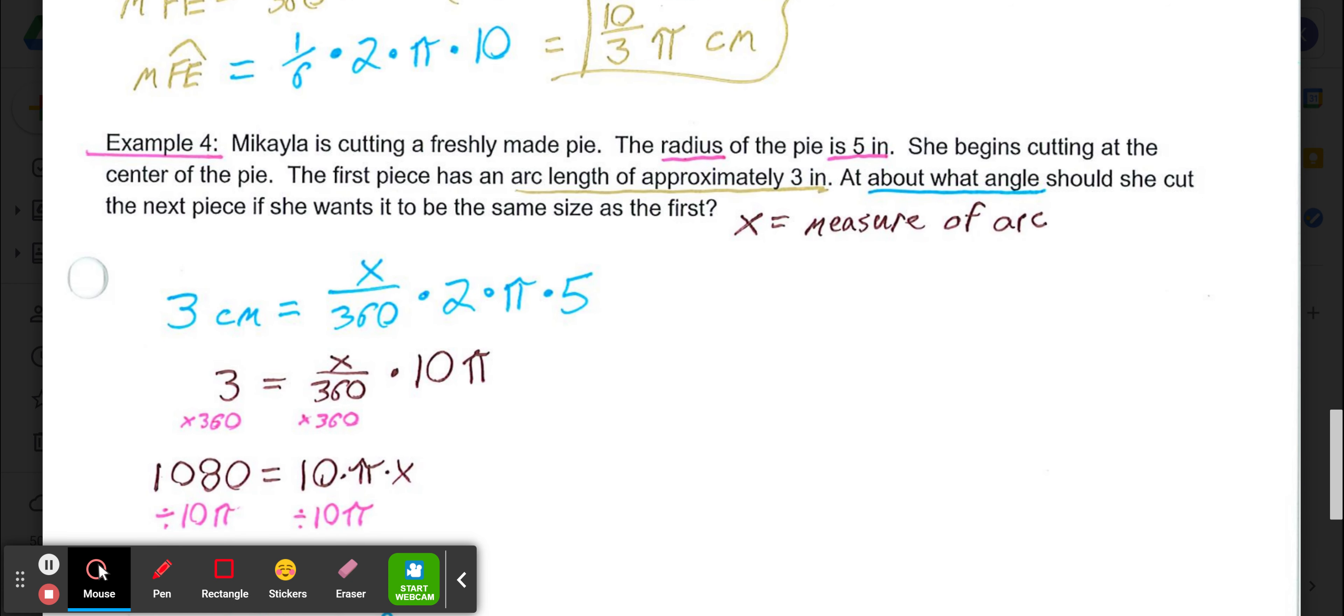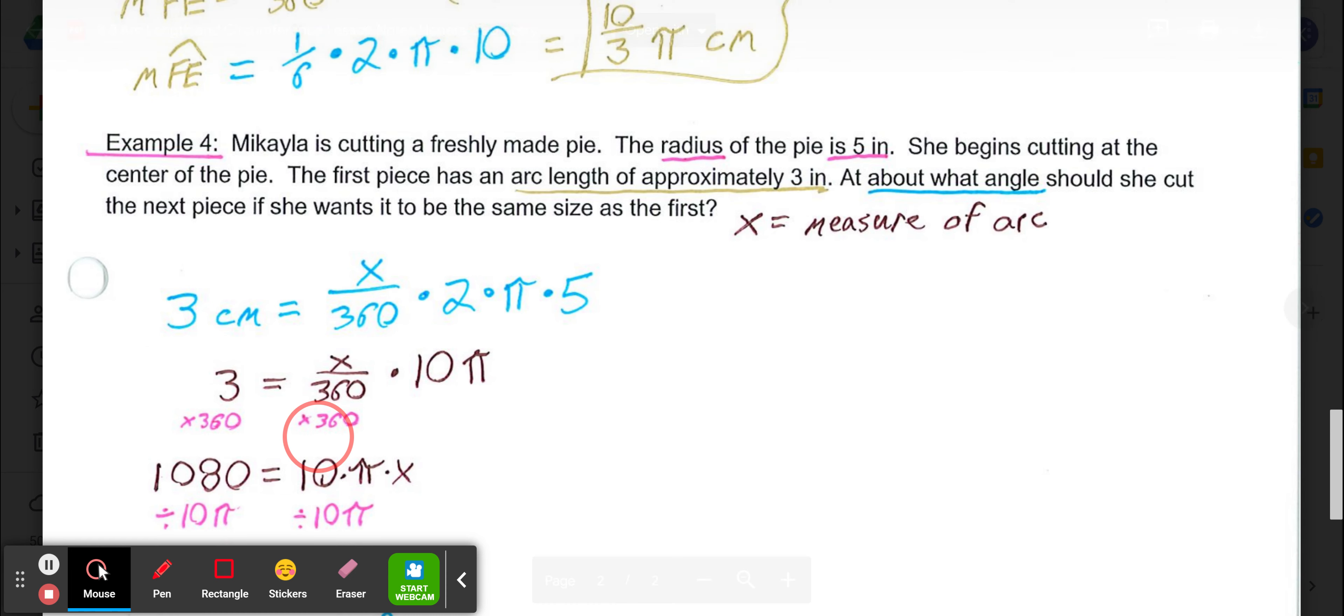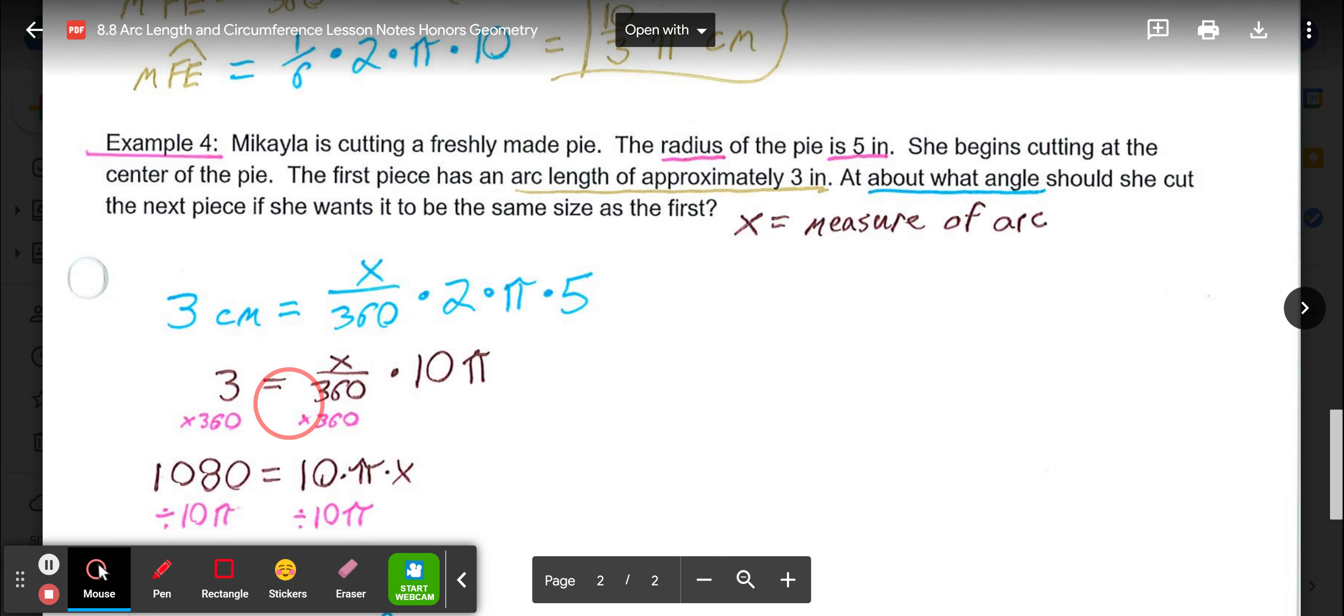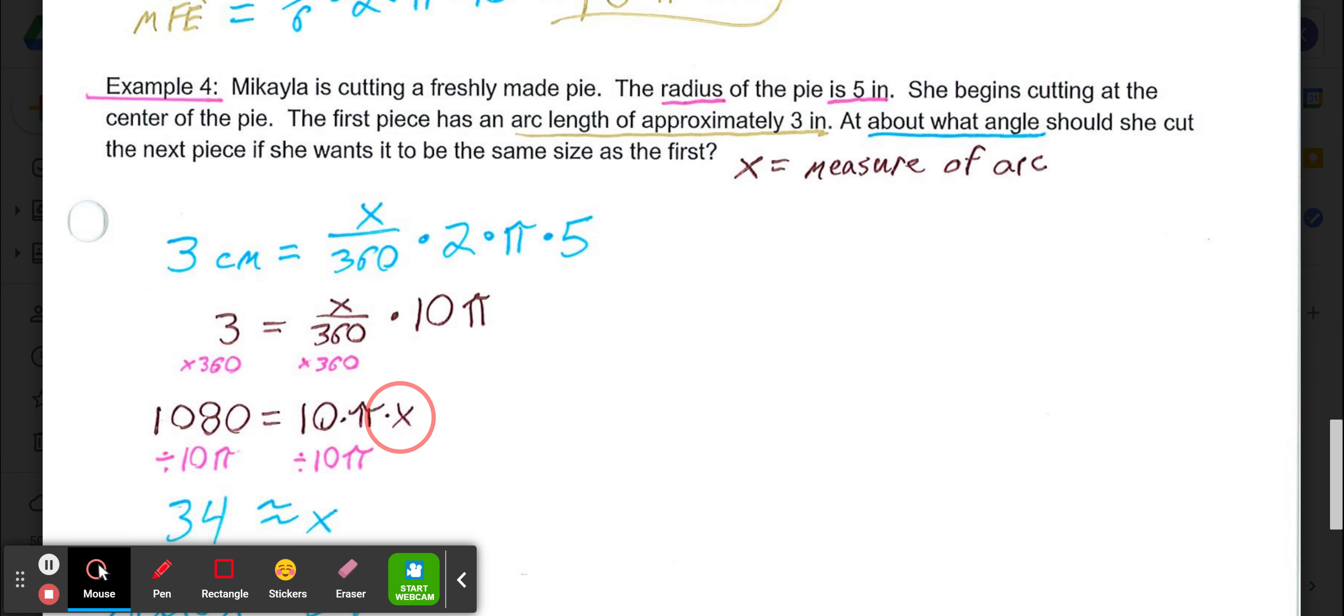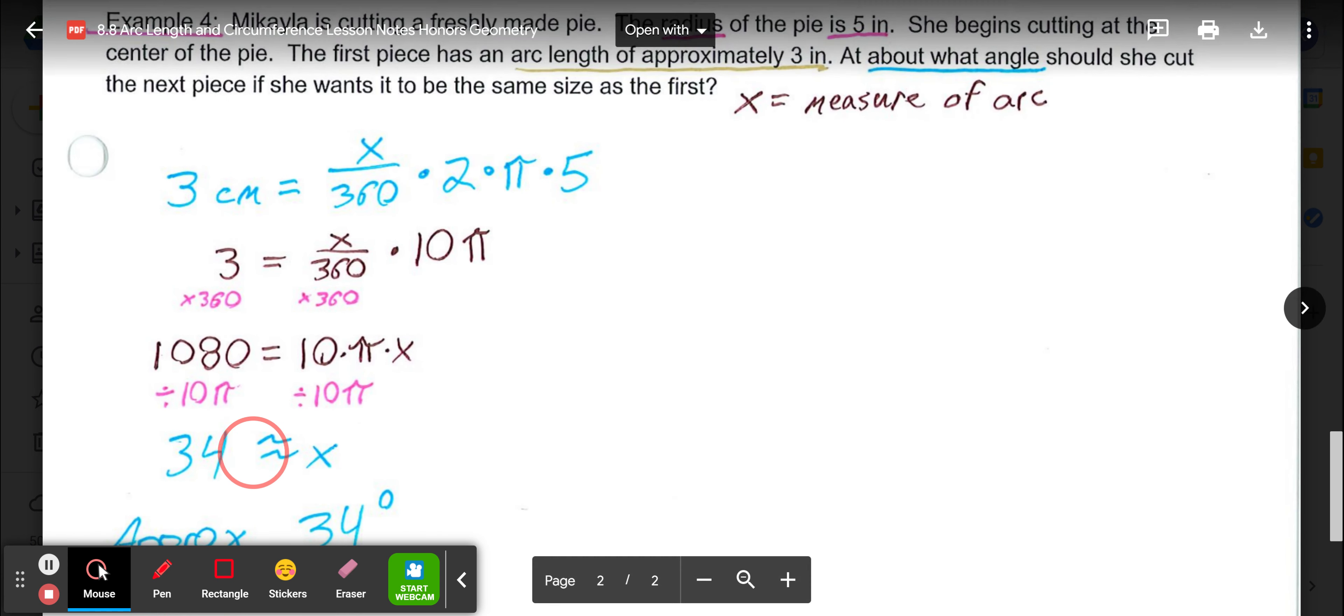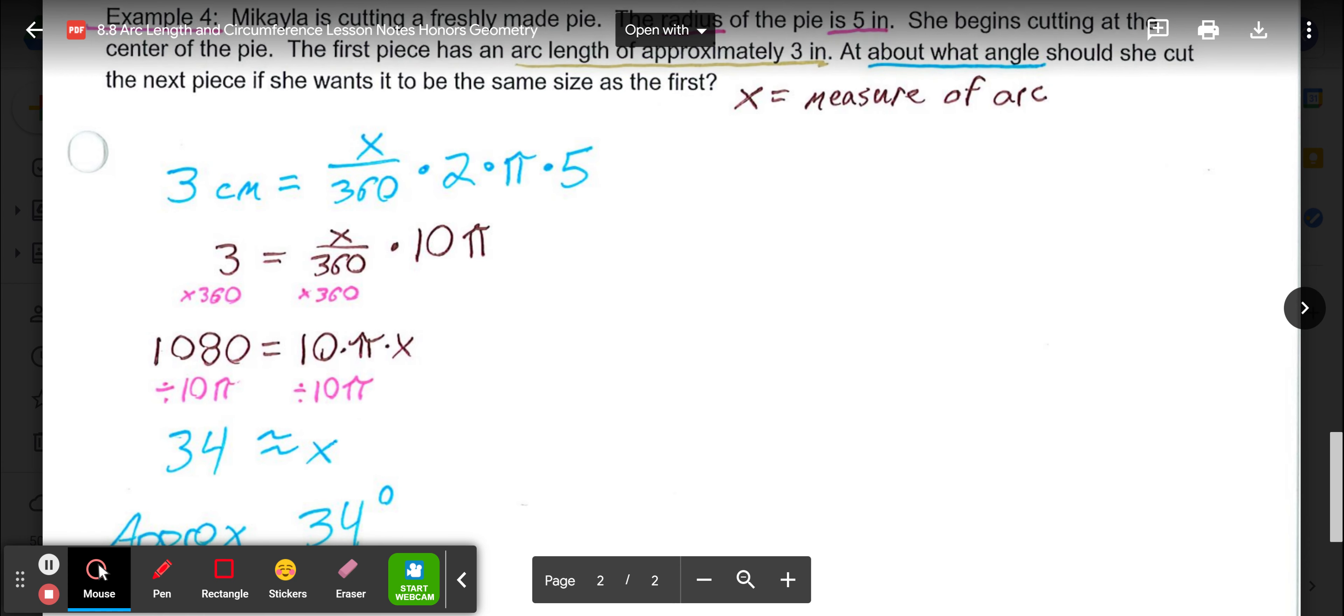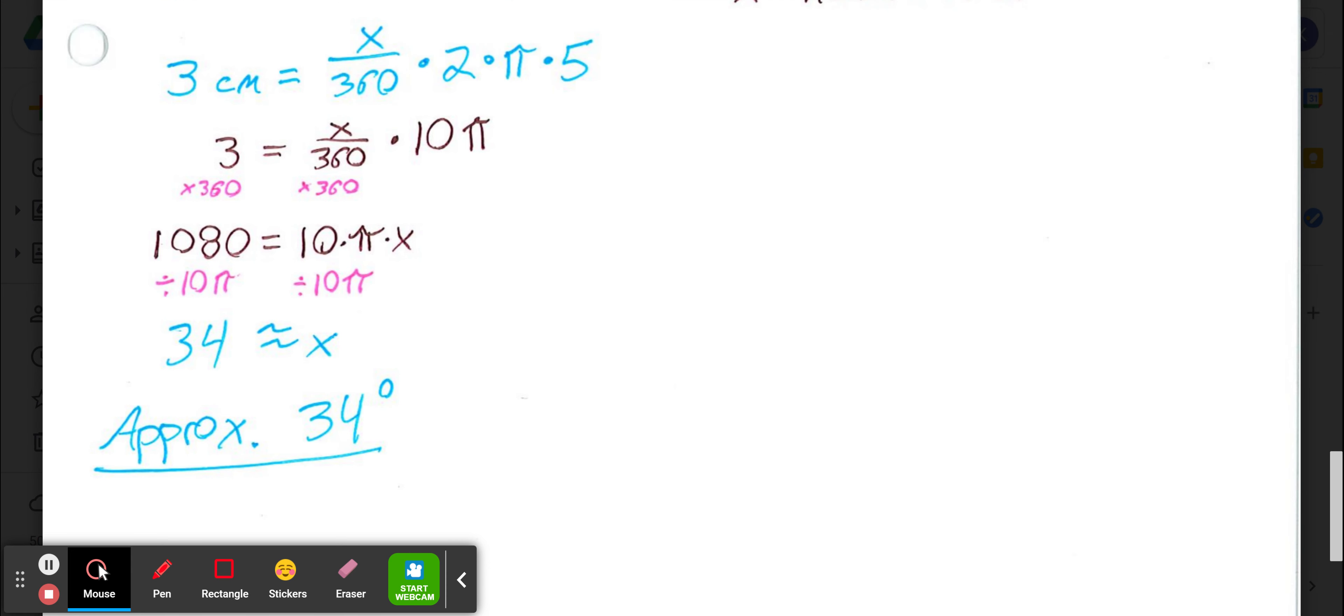If we simplify, 2 times 5 is 10, so that's 10π. X over 360 times 10π equals 3. We need to solve for X. Multiply each side by 360 to get rid of the fraction, so 1080 equals 10πX. Divide both sides by 10π, and X comes out to approximately 34, meaning she should cut from the center at approximately a 34 degree angle to get the next piece to be the same size as the first.